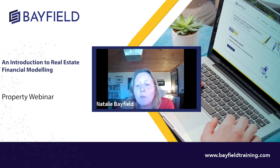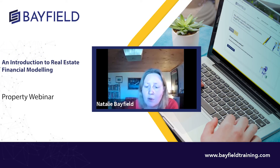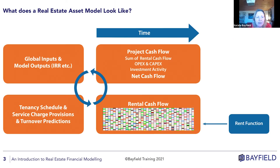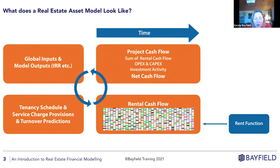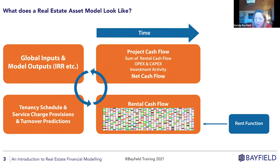A real estate model will have four key areas, and these need to be distinct from one another. A key element, as with any cash flow, is time. We work in an anti-clockwise pattern here, starting with global inputs which affect the whole model.